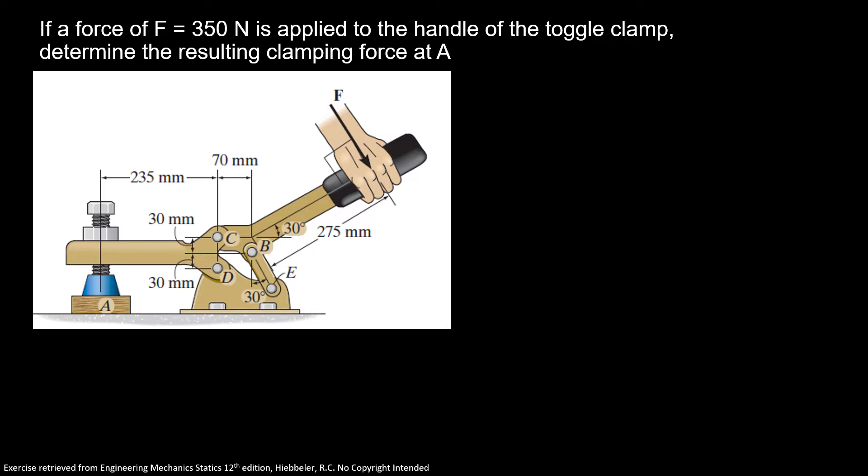Now let's see our problem. If a force of 350 newtons is applied to the handle of the toggle clamp, determine the resulting clamping force at A.